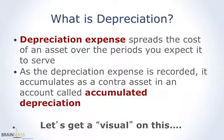As you record depreciation, it accumulates in a contra asset account — an account that reduces an asset. That account is called accumulated depreciation.